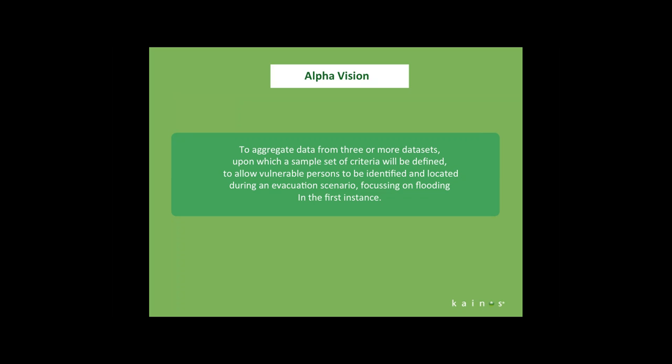The first step for us in delivering an alpha is to determine the actual vision. We agree on a vision statement written in conjunction with the customer. The vision for the Surrey County Council vulnerable persons analytics alpha was to aggregate data from three or more data sets, upon which we would define a sample set of criteria to allow vulnerable persons to be identified and located during an evacuation scenario, focusing on flooding in the first instance. This vision statement goes prominently on the whiteboard in the development room, focusing us on what data we need and how to achieve this within the evacuation scenario constraints.